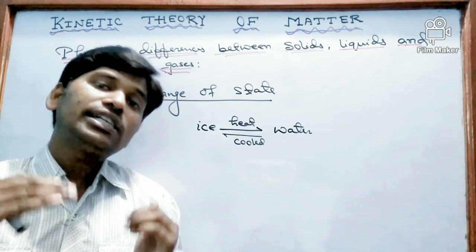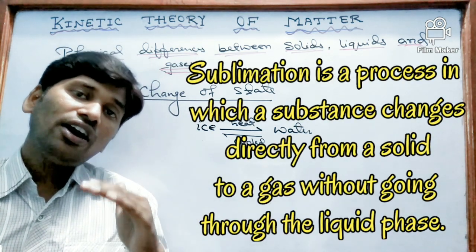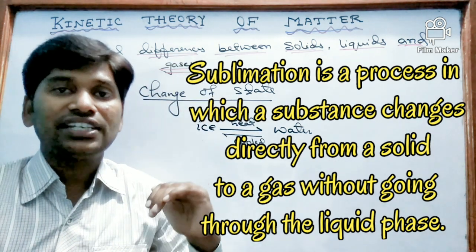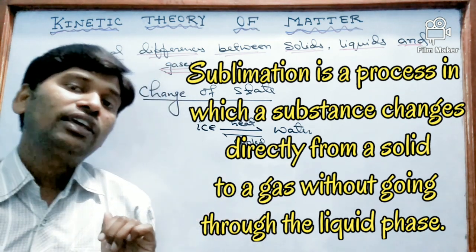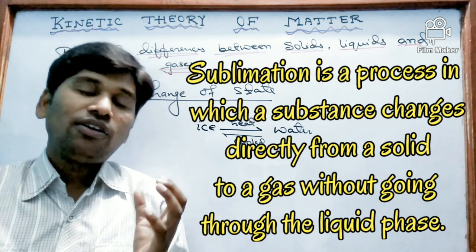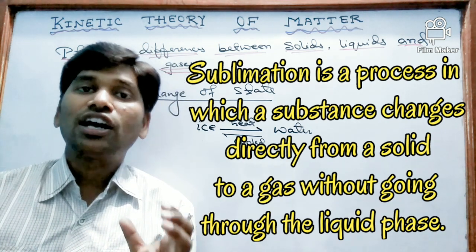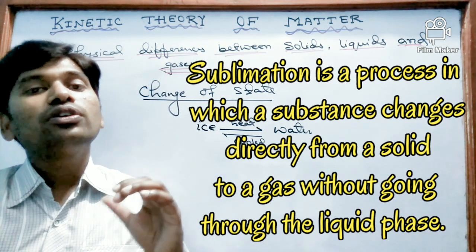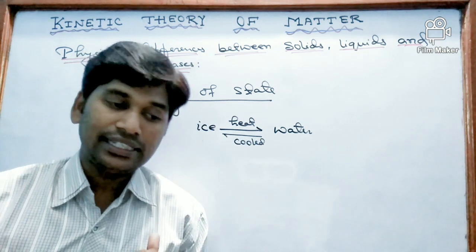The next process is sublimation. It is a process in which a solid directly changes to the gaseous state without going through the liquid state. For example, dry ice undergoes sublimation. Another example is camphor — in Hindi called kapoor — which also converts directly from solid to the gaseous state.